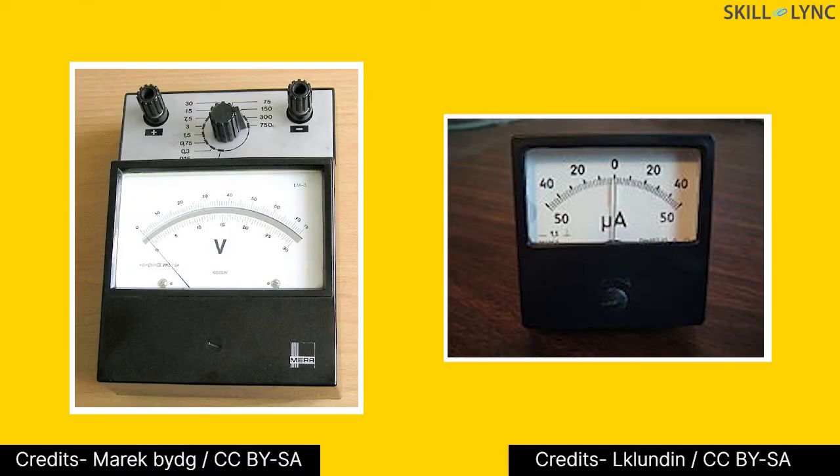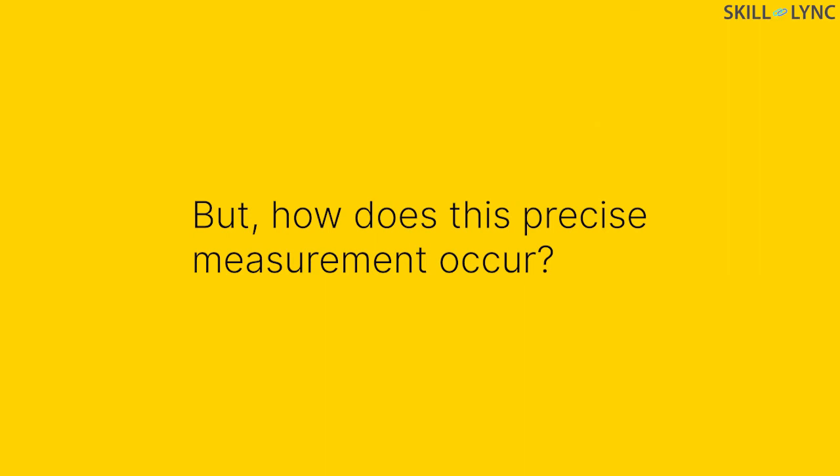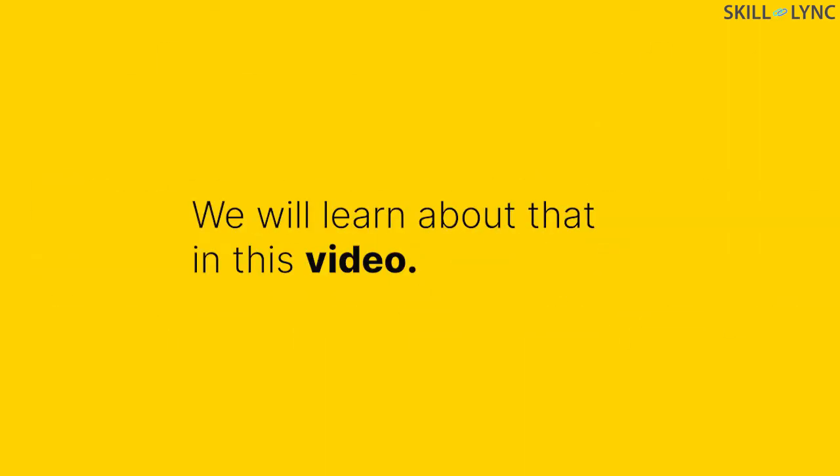Hey guys, welcome back to the channel. We all must have seen a voltmeter or an ammeter. There's a pretty good chance that you would have seen them in the labs in our college to measure voltage and current. The pins on these instruments indicate the measured value by pointing on the scale. But how does this precise measurement occur? We will learn about that in this video.